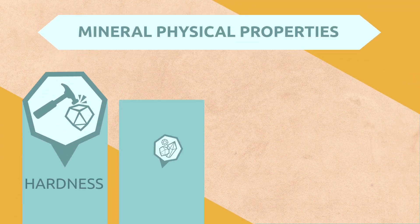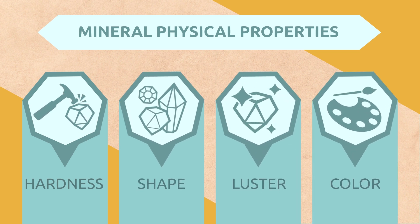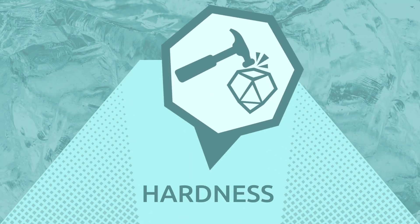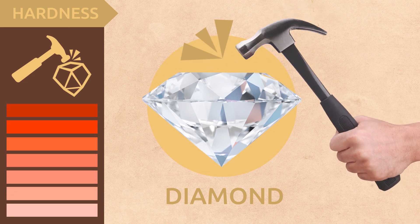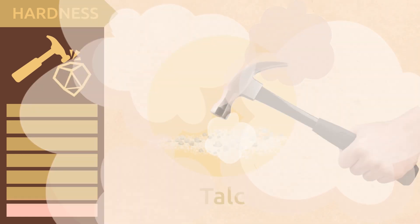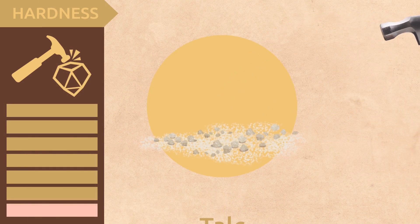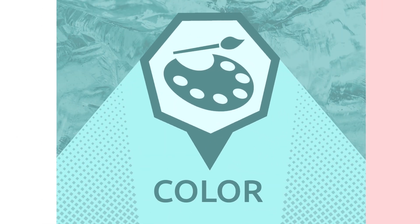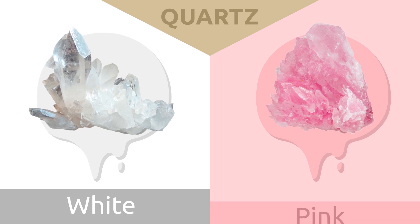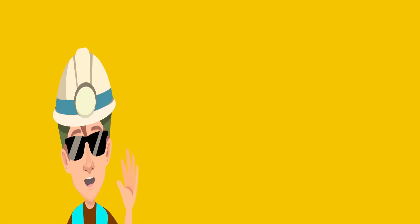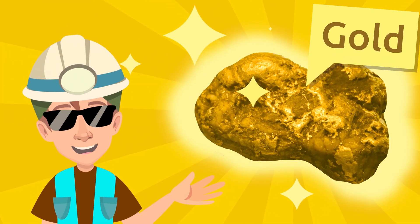Minerals are very different from each other and have important physical properties: hardness, shape, luster, and color. Come with me — I'll show you some minerals. This one here is a diamond, the hardest mineral that exists. This one is talc, the softest mineral. This is quartz — it can be white or pink. And this is gold, a very shiny material.